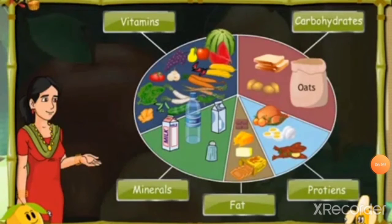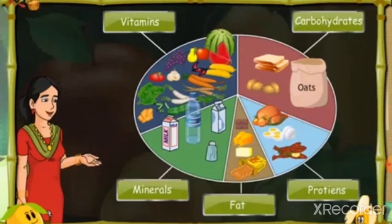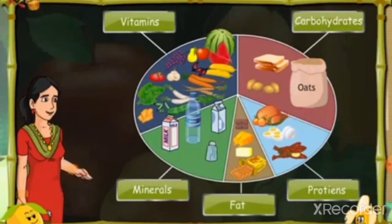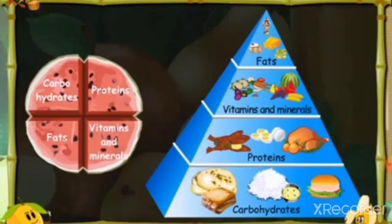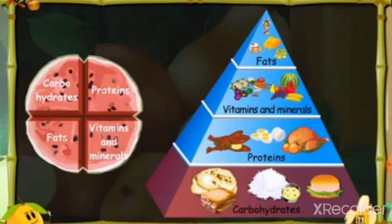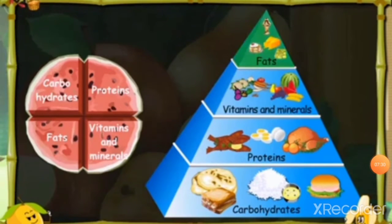A diet that has all the nutrients in the right amount, dietary fiber, and water is called a balanced diet. In order to stay healthy, we should eat food items from each of the food groups — carbohydrate, proteins, vitamins and minerals, and fats.